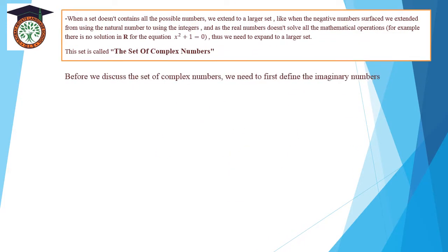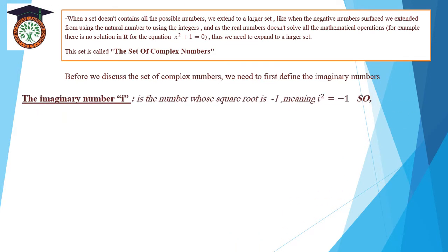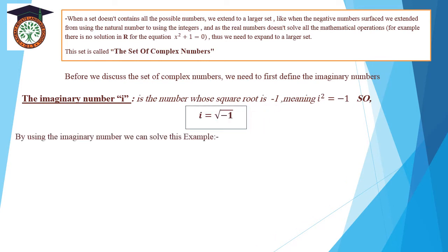Before we discuss the set of complex numbers, we need to first define the imaginary numbers. What is the meaning of imaginary numbers? It is the square root of negative 1, meaning i² equals negative 1. So, i equals square root of negative 1.